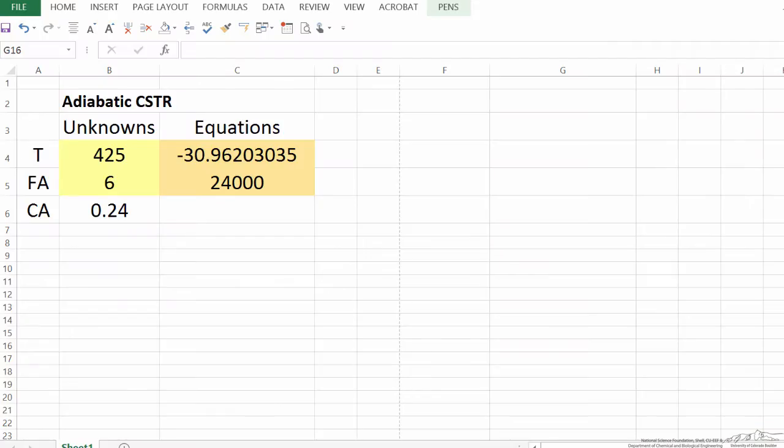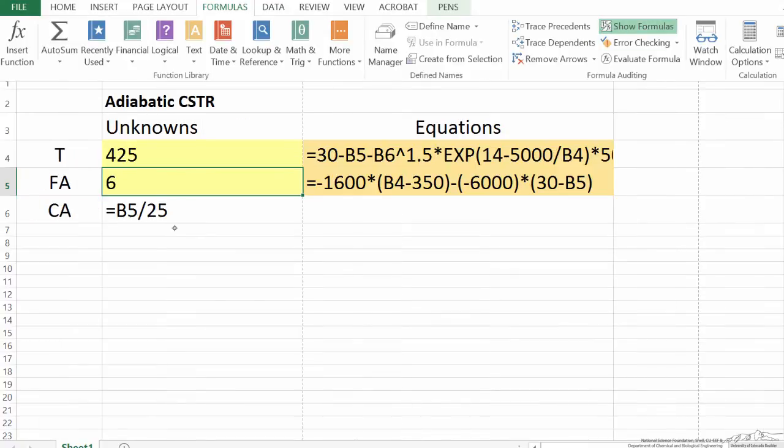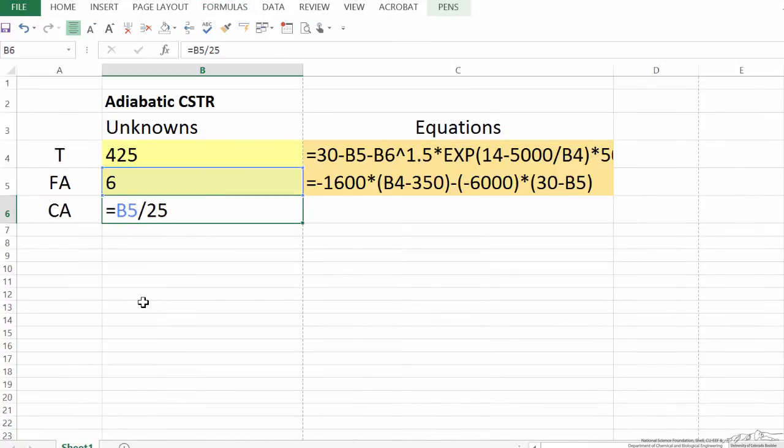So what I've done is now create a spreadsheet where here I put a guess value for the outlet temperature. It should be higher than inlet temperature, 350. I've likewise put a guess value for the flow rate leaving. It should be lower than the flow rate of 30 that's entering. And then let me go into formulas and show the formulas. So here I'm calculating the concentration for my guess value and for any subsequent value of the flow rate. And here I'm showing the equations.